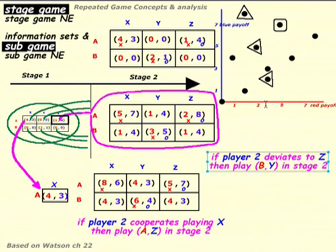In a finitely repeated prisoner's dilemma — repeat it once, twice, three times, and it stops — you go to the end, and the players are going to play the defecting strategy. There's nothing you can do at earlier stages to change future behavior, and we get what's called the unraveling of cooperation. Everyone would like to get the good outcomes, but because there's an end game and they're intelligent, they go to the end and see they'll be taken advantage of. So nobody cooperates, and cooperation unravels.